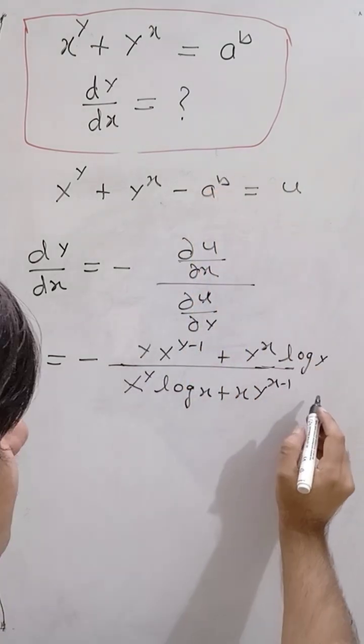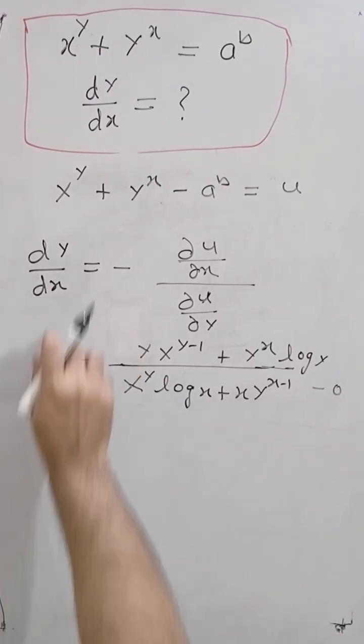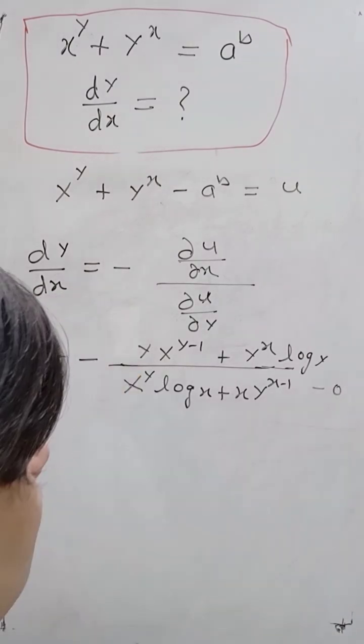And a to the power b differentiation is 0, minus 0. So this is the answer: dy by dx is equal to this.